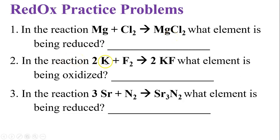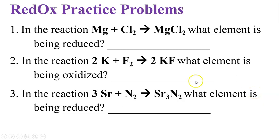In the reaction 2K + F2 → 2KF, which element is being oxidized? Oxidation is loss of electrons. Potassium loses electrons to become a +1 ion, so potassium is being oxidized. In the reaction 3Sr + N2 → strontium nitride, which element is being reduced? Strontium has a +2 charge because it loses two electrons, so it's oxidized. Nitrogen gains electrons and has a negative charge, so nitrogen is being reduced.